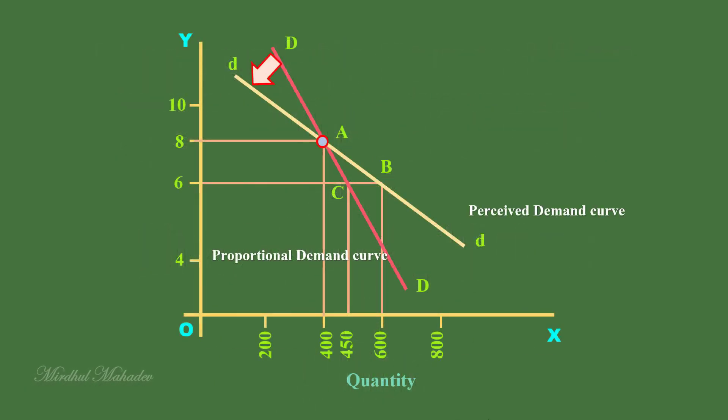a firm can operate along the perceived demand curve. But it cannot operate only on the perceived demand curve, totally ignoring the proportional demand curve. Why? The following numerical example will help you understand this.